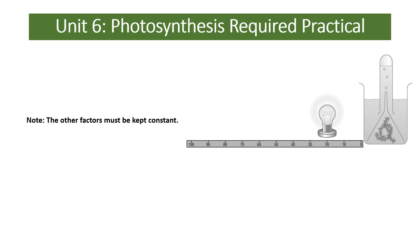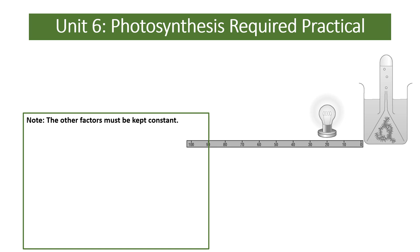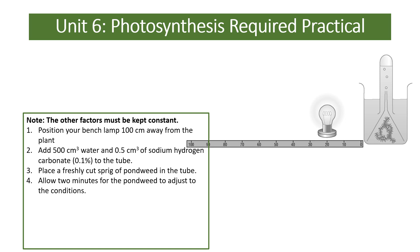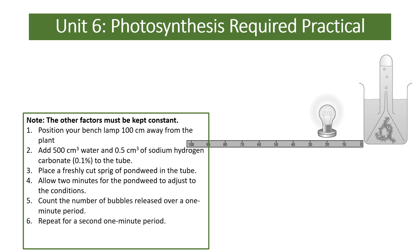For the required practical measuring the effect of light intensity on photosynthesis, all other factors must be kept constant — control variables include temperature and the amount of pond weed. Position your bench lamp 100 cm away from the plant, add a set amount of water and sodium hydrogen carbonate to create carbon dioxide, place freshly cut pond weed in the water, allow two minutes to acclimatize, then count the number of bubbles released in one minute — repeat for a second minute to get a mean. Repeat moving the lamp closer: measurements at 100, 80, 60, 40, and 20 cm are appropriate. You need to recall this method and be able to analyze the results, as it is a very popular exam question.